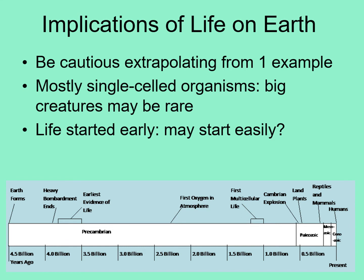Life on Earth started almost as soon as it was possible for life to exist here. Before four billion years ago, the Earth was still suffering from large impacts that produced the giant impact basins on the Moon. Impacts this large would have had enough energy to boil away any early oceans and sterilize any early attempts at getting life started. Yet not long after the last of these large impacts, life was well underway on our planet. This may mean that once there are reasonable conditions for life to get started, it is likely to begin quickly.